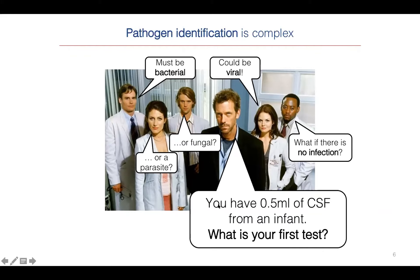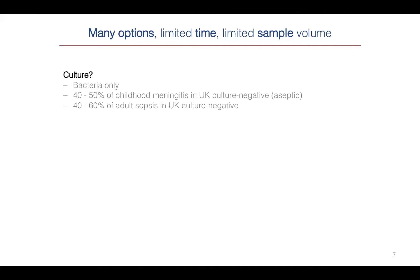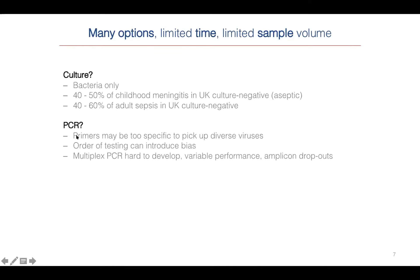The trouble is you often have a very small amount of sample in a small amount of time. In this case, particularly the meningitis study, we had absolutely tiny volumes of CSF from infants, so the question is: what do we test for? You could culture — that takes time and only picks up bacteria. It is exquisitely sensitive, but for childhood meningitis in the UK, half the samples were culture-negative or aseptic, and the same is true of adult sepsis.